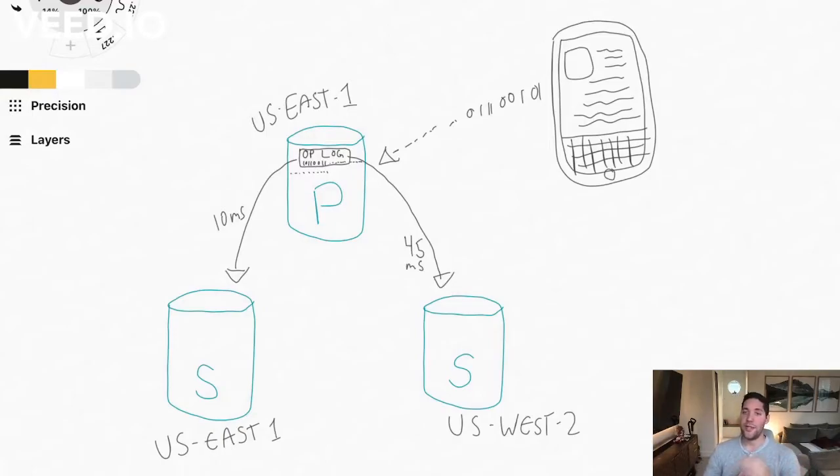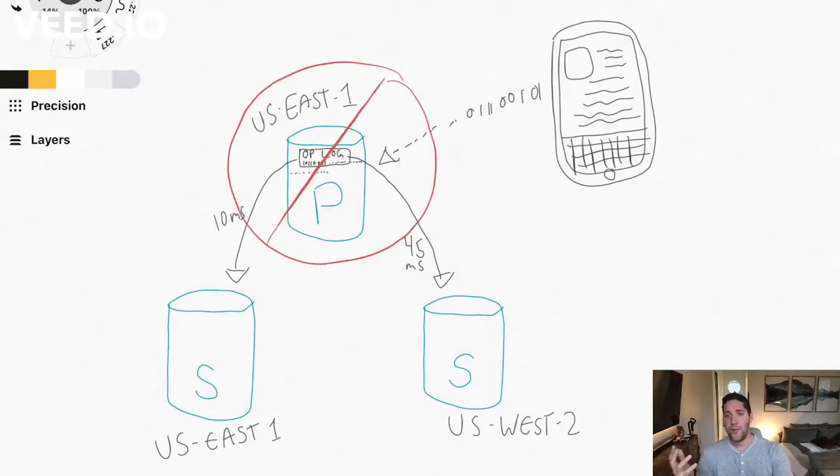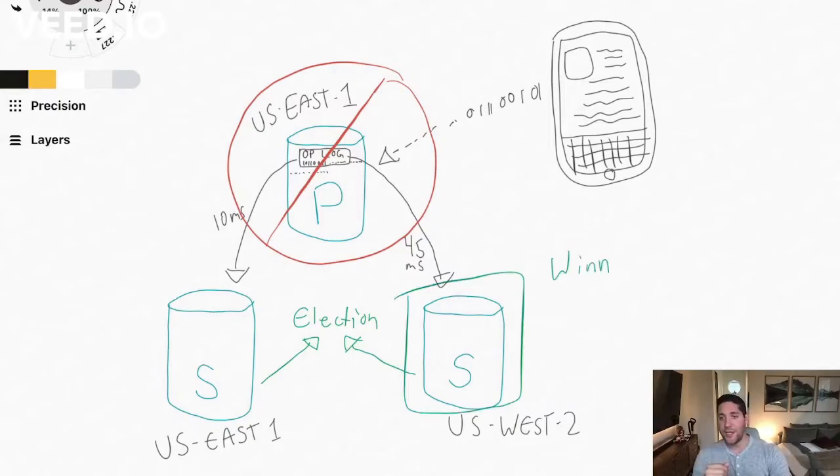So let's go ahead and say that our current primary goes down. Now what do we do? Well, the secondaries are going to have to hold an election, and in this election they basically both cast a vote to decide which member will become the new primary. So in this example, we'll say that US West 2 is the winner and it becomes the new primary. Now fortunately for us, we don't have to go back to the application and point it to this new alternate server.